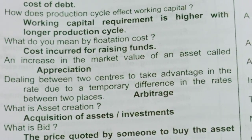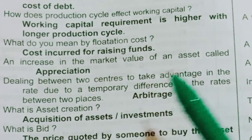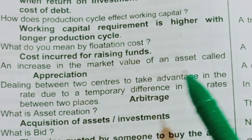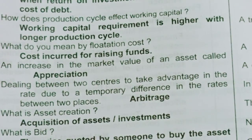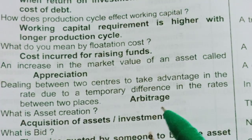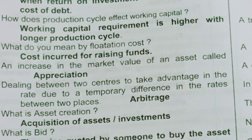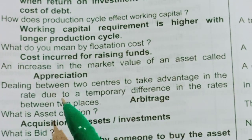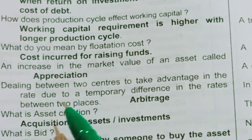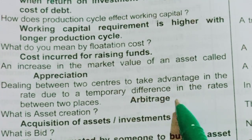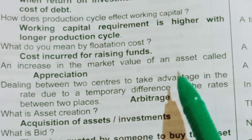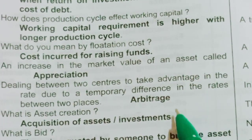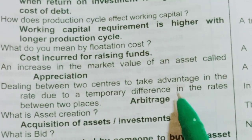Dealing between two centers to take advantage of the rate due to a temporary difference in the rate between two places — the answer is arbitrage. Arbitrage involves buying a security in one market and selling it at a higher price in another market to take advantage of the temporary price difference.